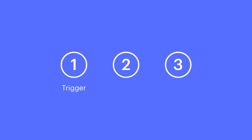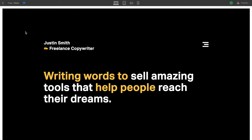We'll create the trigger, so the animation is triggered on scroll. We'll create the animation, which we can reuse so we're not building it over and over. And we'll apply that animation to the other elements. If we have time, we'll do a sentence diagram on this heading and count the verb-noun pairings.